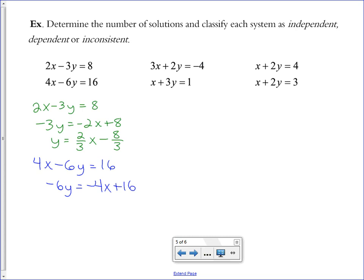Divide by negative 6. Simplify those fractions, and I get positive 2/3x minus 8/3.